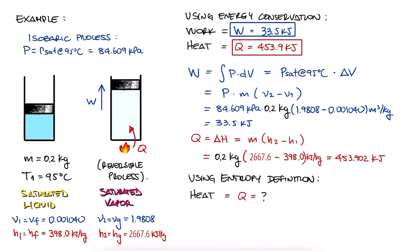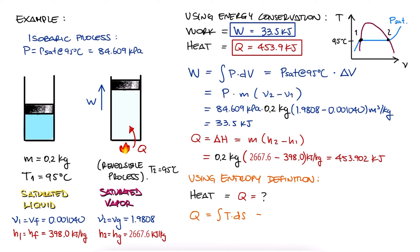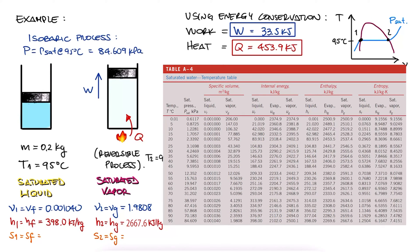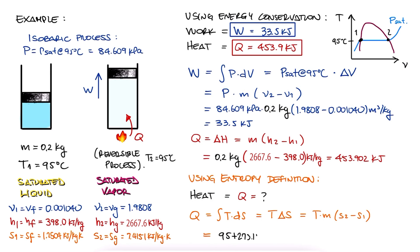Now, since one of the versions of our definition of entropy was that the heat is the integral of temperature dS, and in this specific case the temperature is indeed constant, the integral results in a very similar expression as the work. Work equals P delta V, and Q equals T delta S. Therefore, Q is T times M times the change in specific entropy, S2 minus S1, or Sg minus Sf. We look up those values in the table, and we substitute the temperature, always in Kelvin, and the mass and the entropies, to find a heat transfer value of 453.9 kilojoules, which is awfully close to what we had obtained before.